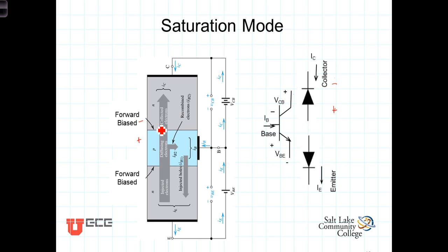Electrons flow freely into the base from the collector. Now, this PN junction was already forward biased, so electrons were flowing freely this way also, and we end up with a situation where the base is effectively flooded with electrons.